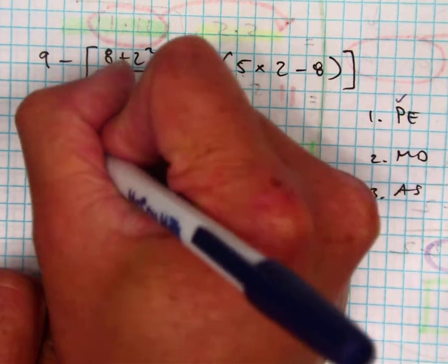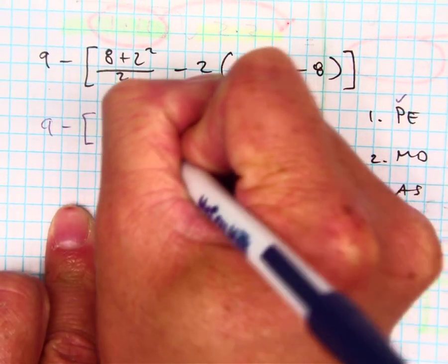So I'm going to do 5 times 2, which is how much? 10. So I just copy all this, repeat it.